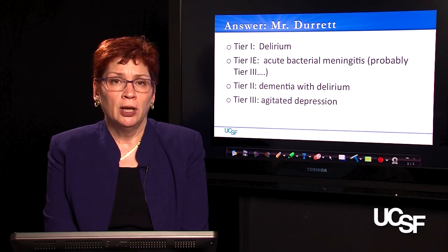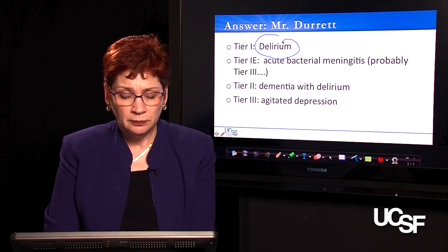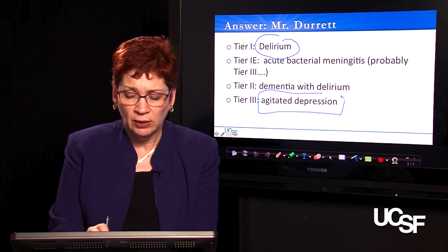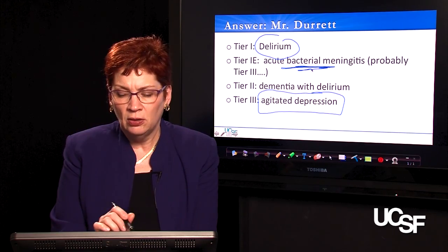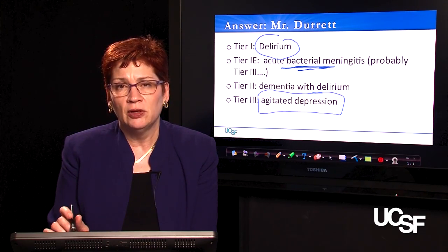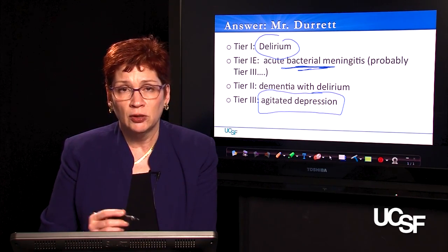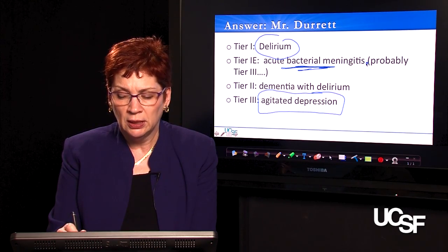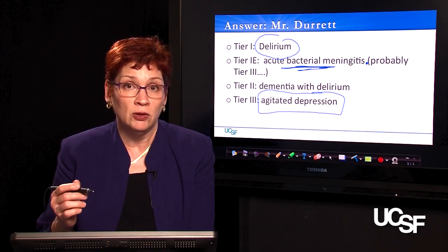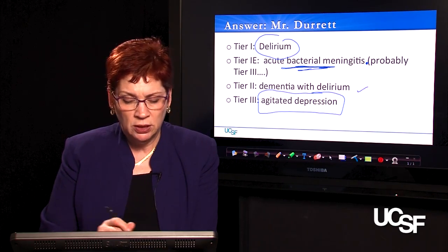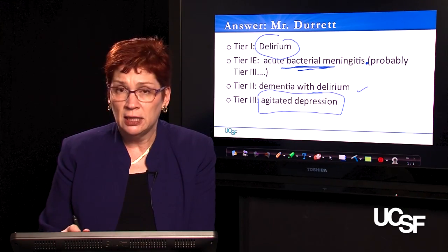If I were to prioritize the differential diagnosis for Mr. Durrett, tier one is likely delirium. Tier three would be agitated depression — he doesn't even really seem depressed, just anxious. Acute bacterial meningitis might be tier one-E; I might consider it, though given the absence of other meningitis findings, the true tier is probably three — but we've discussed being more liberal about serious bacterial infections that could cause death or disability overnight if you guess wrong. Tier two might be dementia with delirium — dementia doesn't happen overnight, but maybe he has some underlying dementia and the delirium is making it worse.